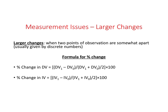Now let us look at measurement issues relating to percent change. Mathematicians distinguish between larger changes and smaller changes — students familiar with calculus will know this difference. By larger changes, what we mean is when two points of observation are somewhat apart, or there is some kind of a gap in between. This is usually given by discrete numbers. For example, when we write two points of observation as 1 and 2, there are points like 1.1, 1.2, 1.3 in between — so when we are looking at numbers like 1 and 2, we are looking at larger changes.